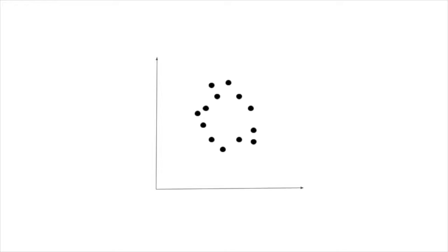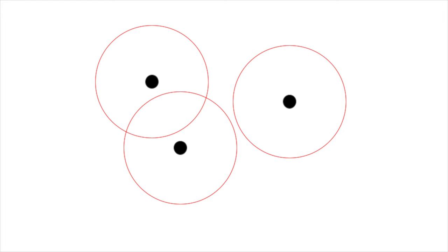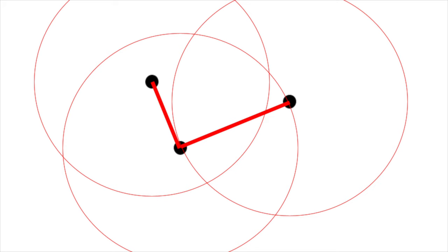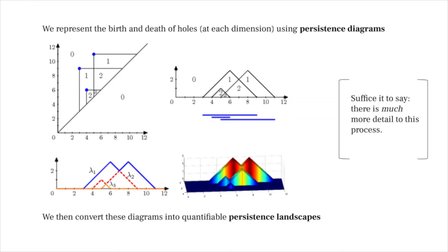Let's return to one of our scatter plots. Imagine we draw a ball around each data point, and we gradually grow each ball over time. There are two rules: one, when a ball intersects another point, we automatically connect the dots between those points; and two, when a ball connects multiple points, it makes a face, not a hole. As you can imagine, the small holes appear and disappear quite quickly, but it's the big hole in the middle that stays the longest. Thus, we can quantify that hole's relevance by how long it survives, which then allows us to quantify the entire shape of the data. And that is a very powerful thing.